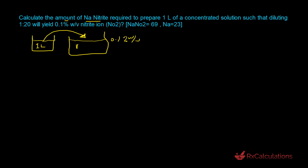We'll first determine the volume of the diluted solution, then figure out how much nitrite ion is present in that diluted solution — and that's where it gets a little tricky. We make use of the 1 to 20 ratio strength, which implies you have one milliliter in 20 milliliters.